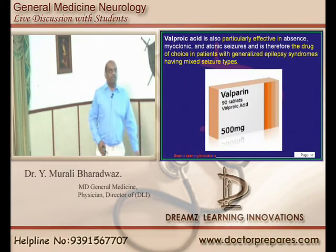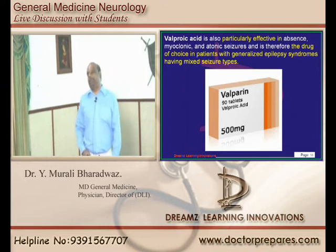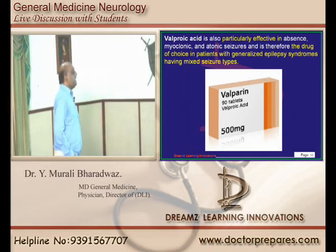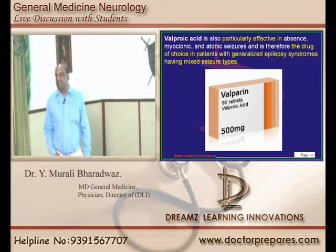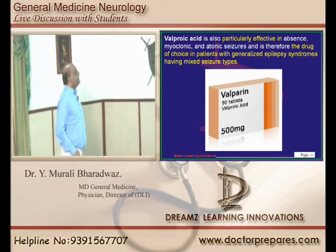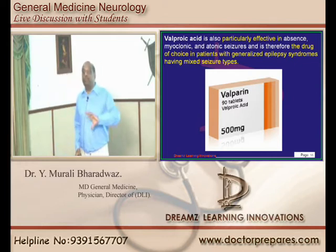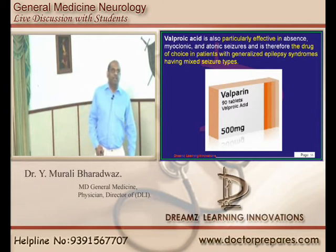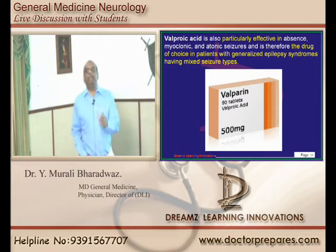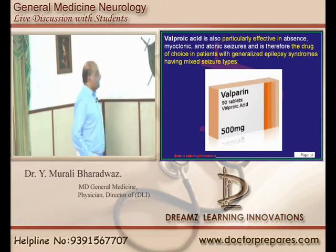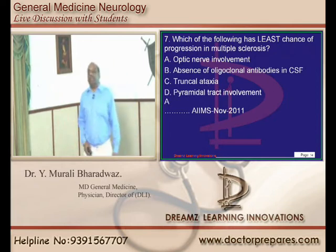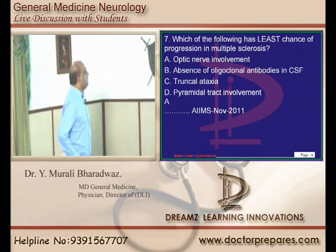Valproate is a very broad-spectrum anti-epileptic — it is used in absence seizures, myoclonic, and atonic seizures. In all three varieties it can be used. Whenever you have a generalized epilepsy syndrome with mixed seizures and wonder which anti-epileptic to use, valproate is the answer.